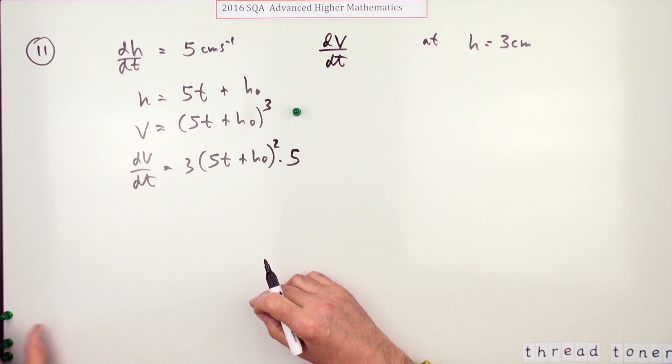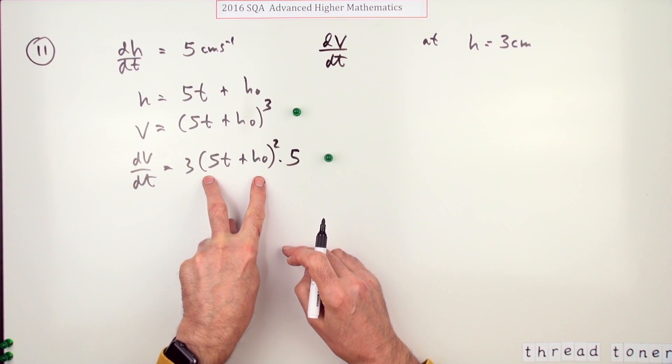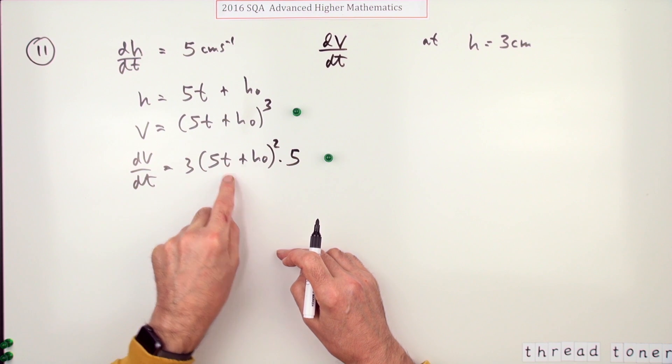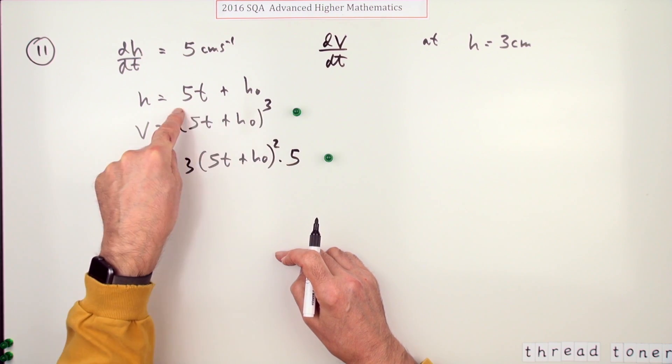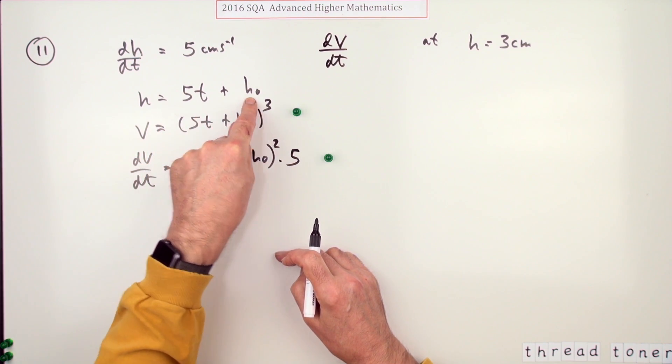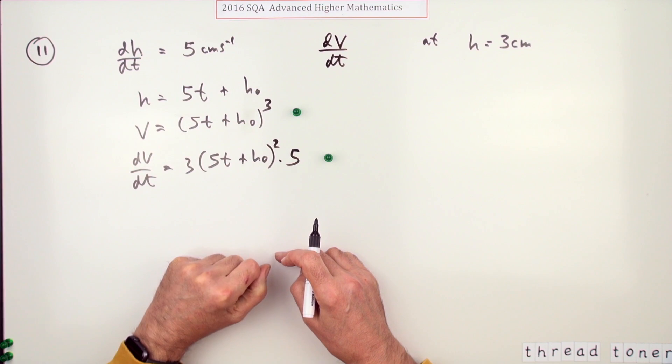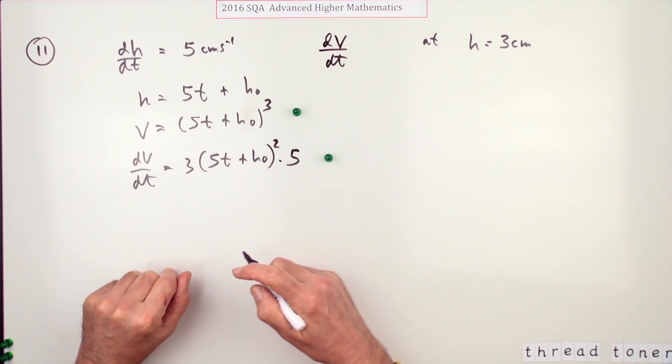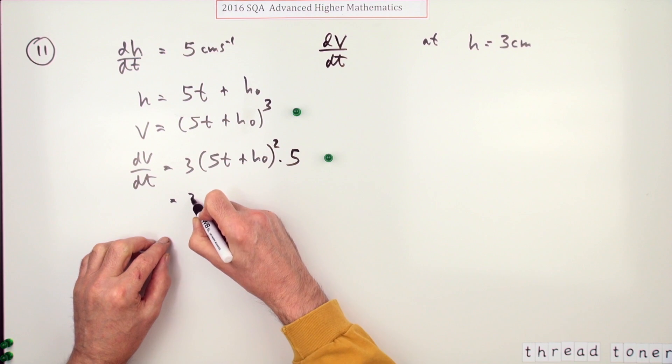Now figuring out t, you don't actually need to figure out what t is to put in here because you've got this expression: 5t + h₀ equals the height. So this should equal three at whatever time that was.